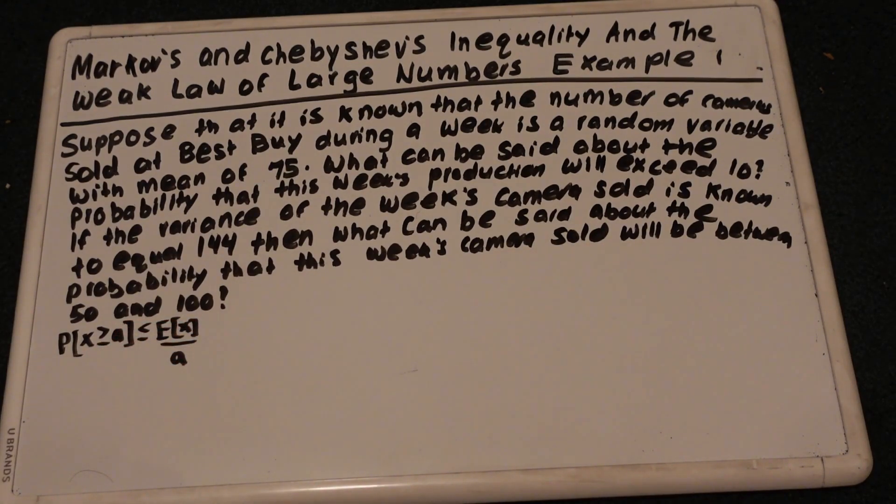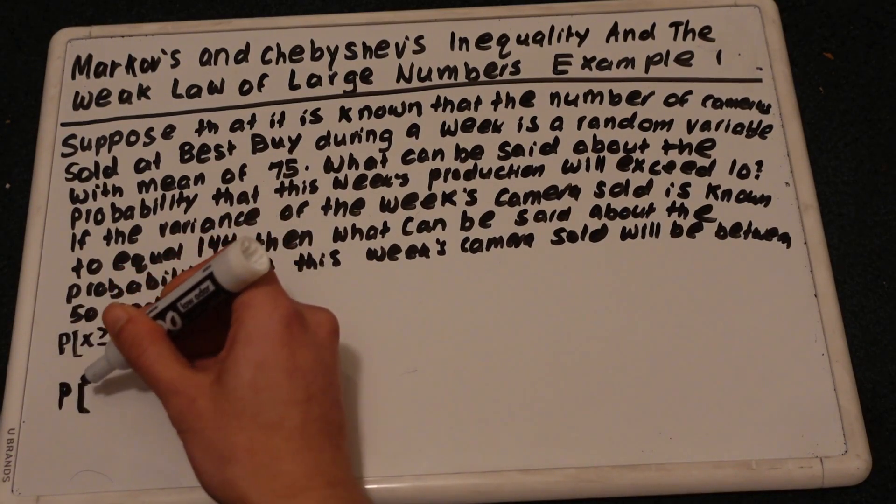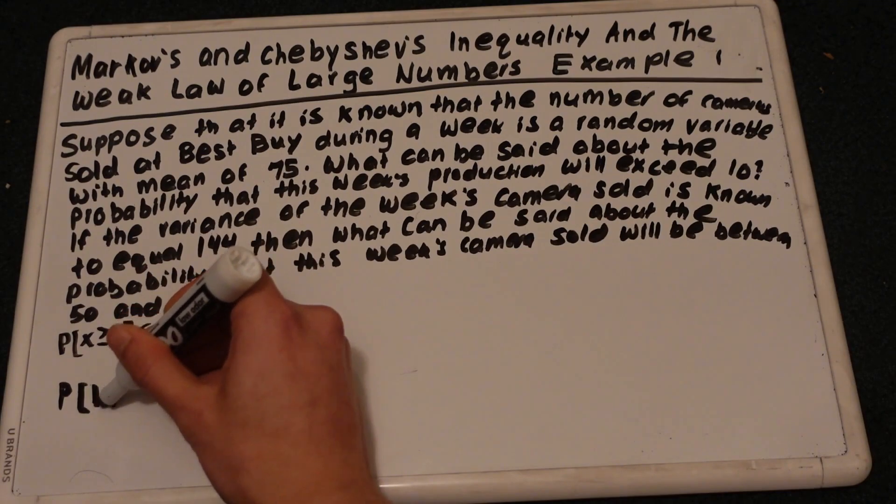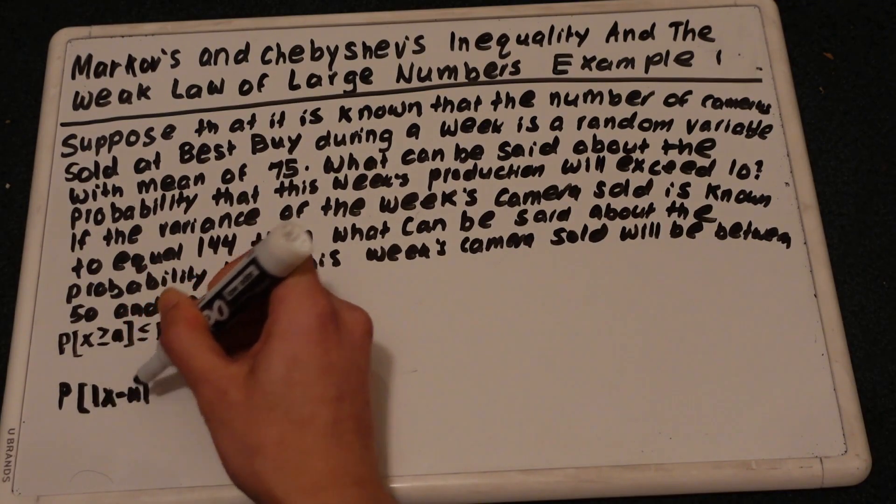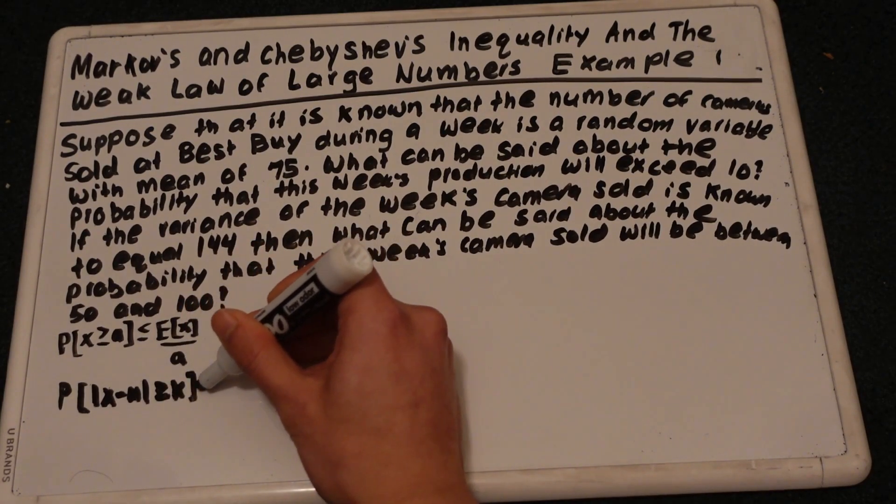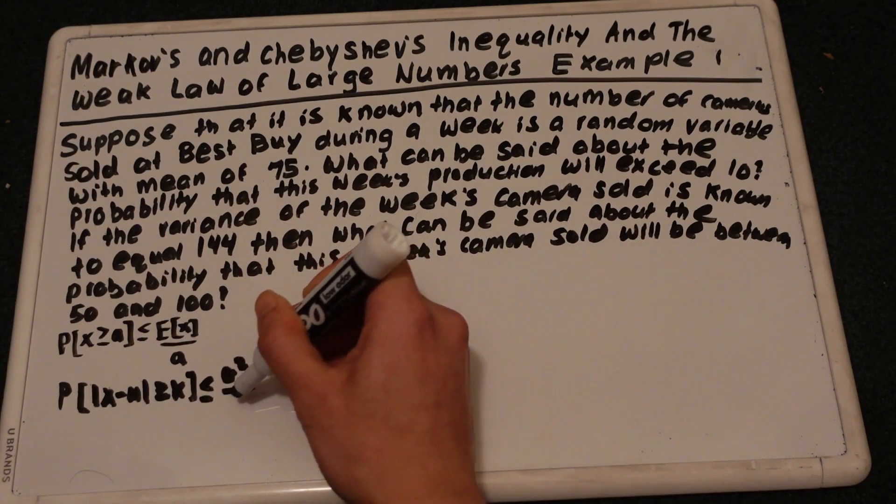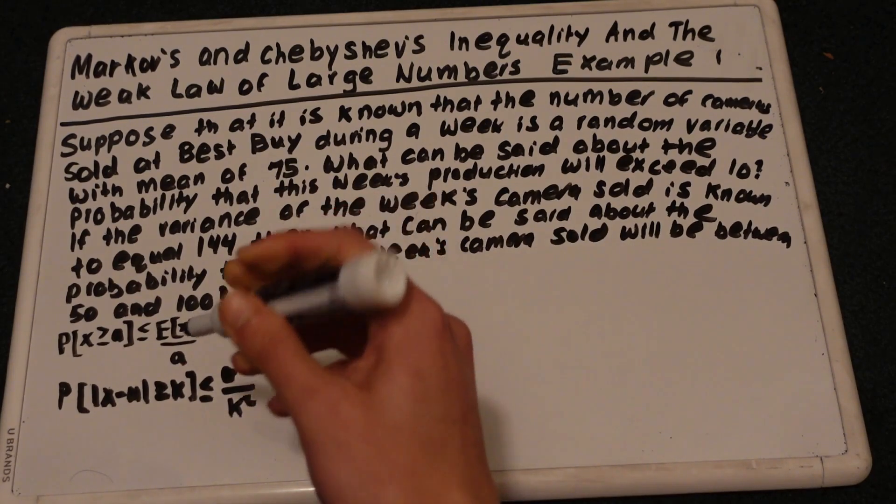And let me also write down the formula for Chebyshev's inequality. So it would be the probability that the distance between X and the mean is greater than or equal to K is less than or equal to the variance over K squared. If X is a random variable with a finite mean mu and variance, then for any K greater than 0, this holds based on the Chebyshev's inequality.